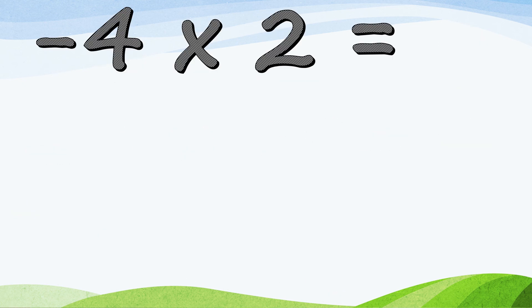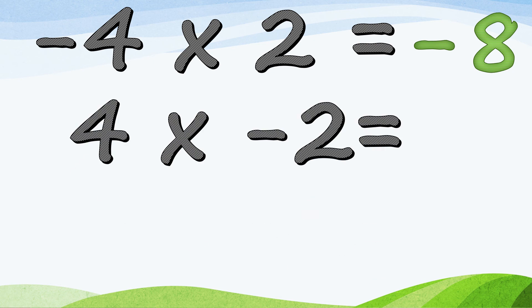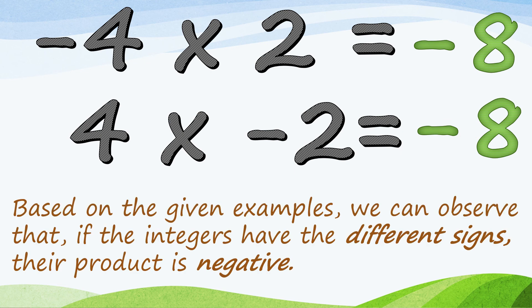Negative 4 times 2 is equal to negative 8. 4 times negative 2 is equal to negative 8. When integers have different signs, their product is negative.